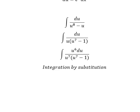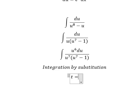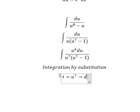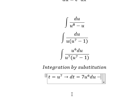I will put t equals to u to the power of seven. Then we need to do the first derivative for both sides. Because we don't have number seven in here, we need to divide both sides by number seven.